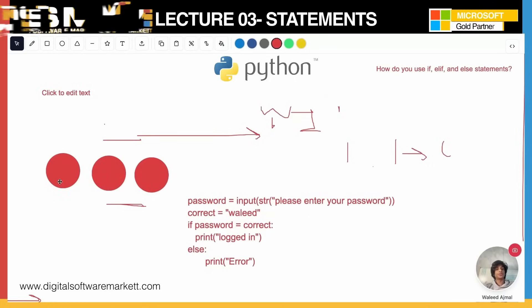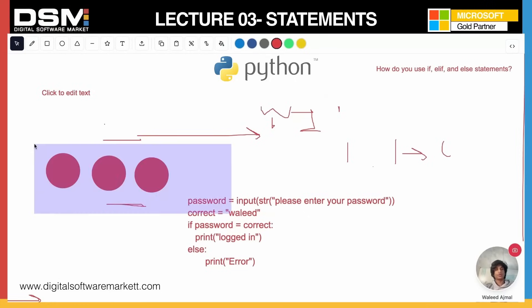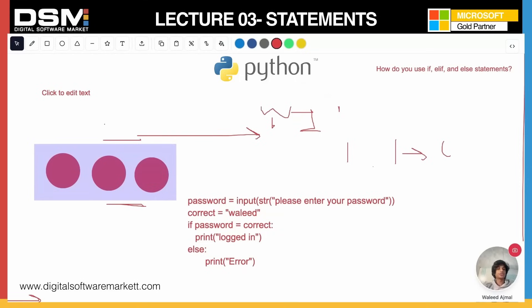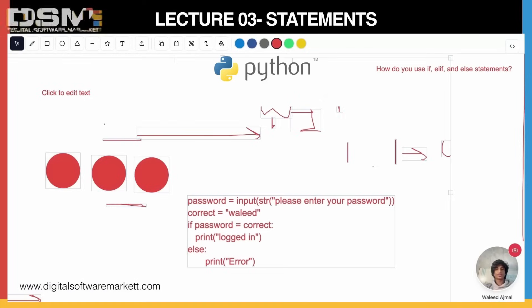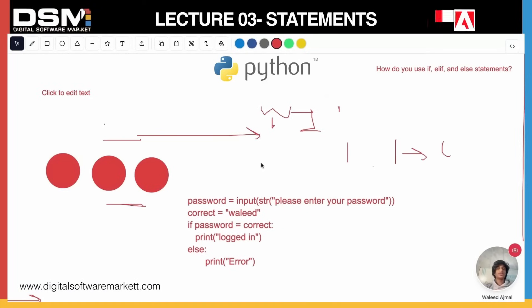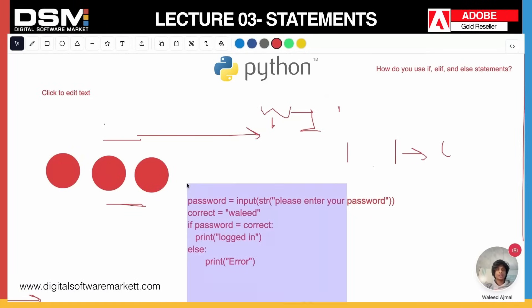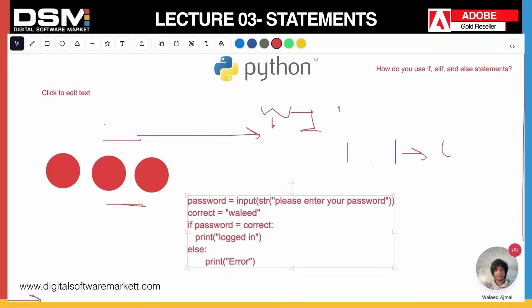There should also be registration in the program — it should save your name, and on the next iteration check your name. This is indeed a complex program and I'll be expecting you to submit it. This is one of the easiest and most important statements, and I encourage you to practice it at home.